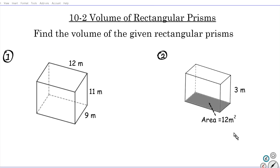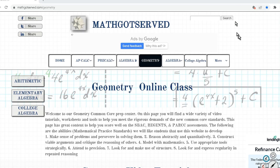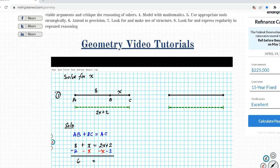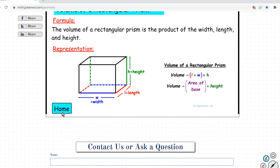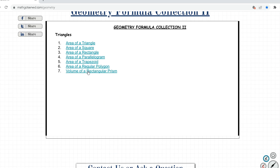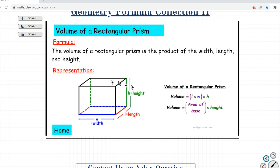The instructions for the examples we're going to work on are to find the volume of the given rectangular prisms. To get us started, let's take a look at the formula for the volume of rectangular prisms. To do that we're going to go to our website mathgotserved.com, go to geometry, and scroll down to our formulas section. We have a whole bunch of formulas here, and if we go to the volume of a rectangular prism we're going to see the formula we'll be using in this tutorial.